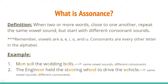The last thing is assonance. Assonance is when you have that repetition of the vowel sound — so that's only A, E, I, O, and U. And remember, it's the sound. For example: men sell the wedding bells. You hear that same vowel sound over and over again, and that's what makes this assonance. The engineer held the steering wheel to drive the vehicle.